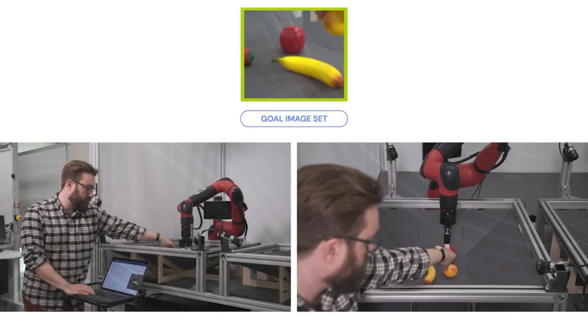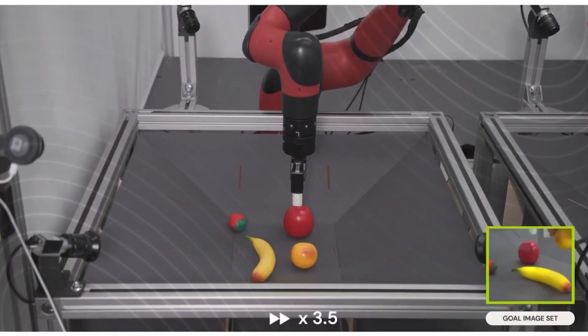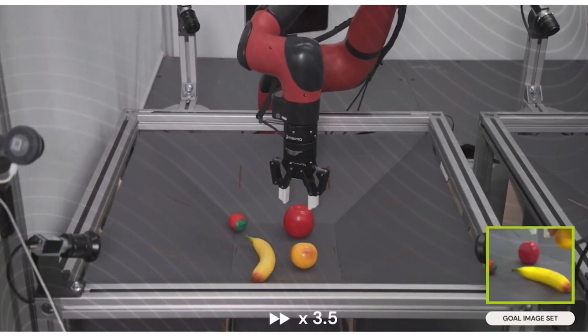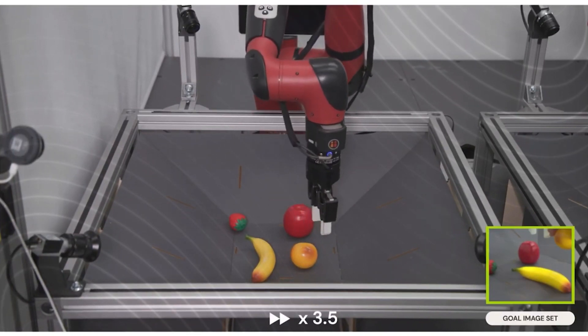All the team has to do is present a desired object arrangement to one of its cameras. This is all the information RoboCat needs to do the task.